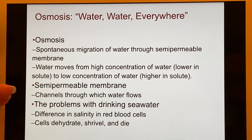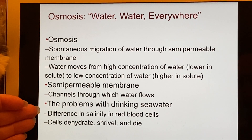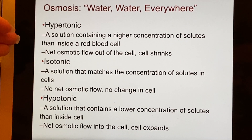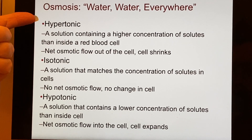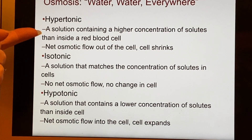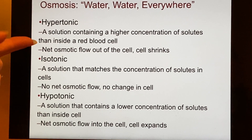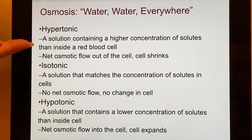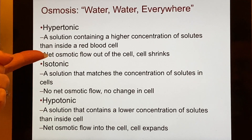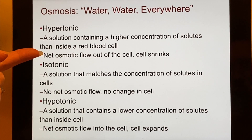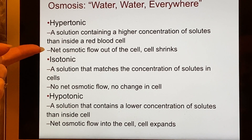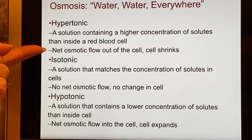You can look at this in terms of what happens to red blood cells in your blood with a change in salinity. There are specific terms for these different solutions. If you have a hypertonic solution — hyper meaning higher — it has a higher concentration of solutes than inside a normal red blood cell. That means water will flow out of the cell, leave through the cell wall, which is a semi-permeable membrane, and the cell will end up shrinking.